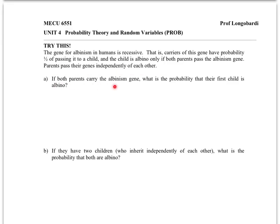Parents pass their genes independently. You're told that both parents carry the gene. What is the probability that their first child is albino? So I'm going to set this up in a particular way. You might have done this differently. I'm going to say that the probability that the gene is passed is equal to one half.